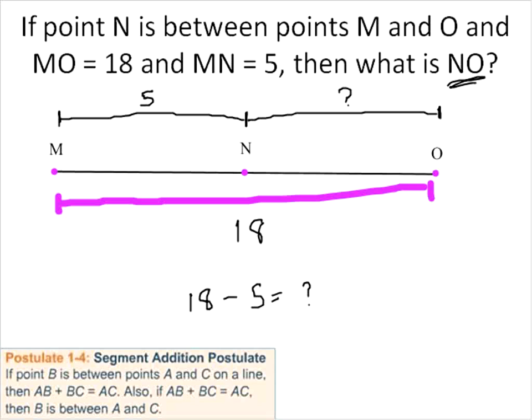What we don't know. 18 minus 5 is 13. So that's going to give us our unknown value of NO.